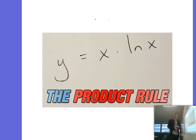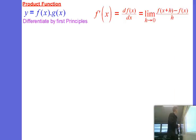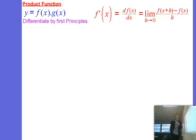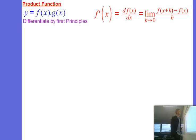Hello, we are looking at differentiation. We're going to examine the product rule. The product rule is finding the gradient function or derivative of the product of two functions, an f of g multiplied by a different function, g of x.